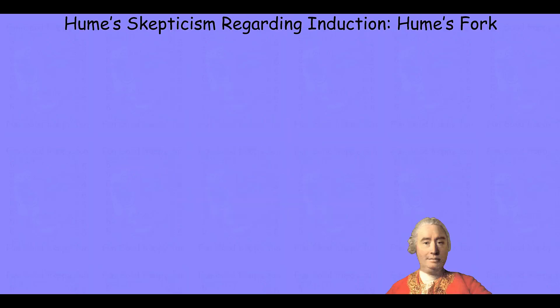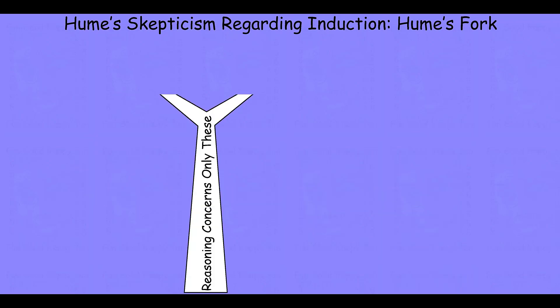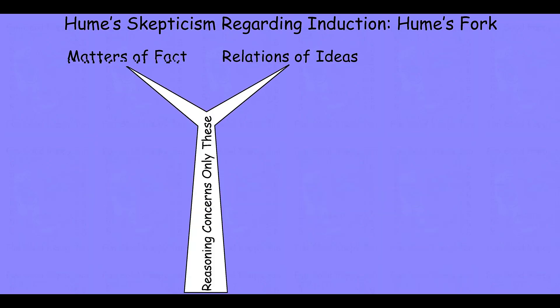Let's begin then with Hume's fork. In paragraph 31, Hume tells us that all the objects of human reason or inquiry may naturally be divided into two kinds — to wit, relations of ideas and matters of fact. This division of the objects of human reason into two different classes, having a different epistemic status and different sources by which they come to be believed, is come to be known as Hume's fork.